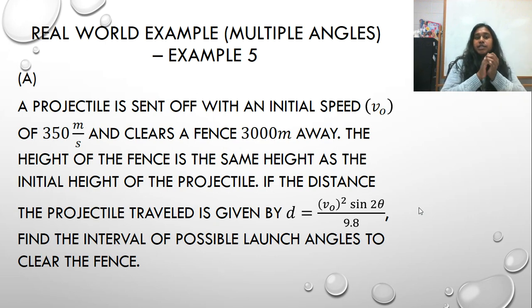So if a projectile is sent off with an initial speed, and they gave you the variable they're using, V0, of 350 meters per second and clears a fence 3,000 meters away, the height of the fence is the same height as the initial height of the projectile. If the distance the projectile traveled is given by this formula, find the interval of possible launch angles to clear the fence.